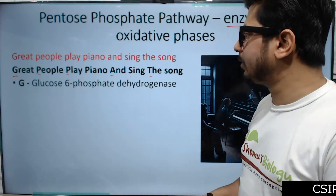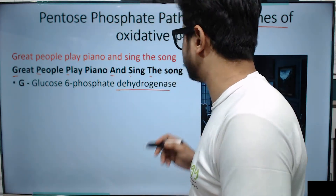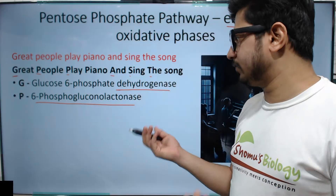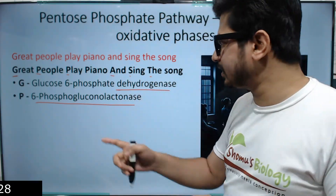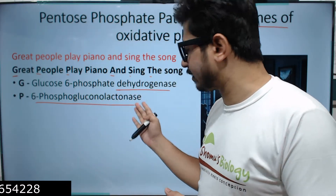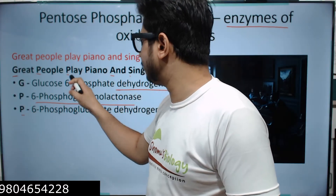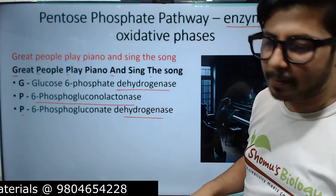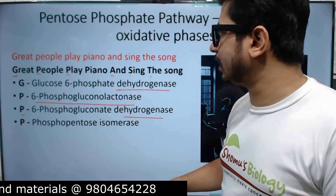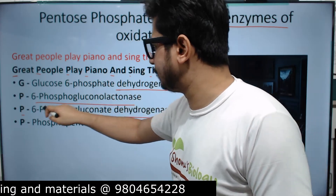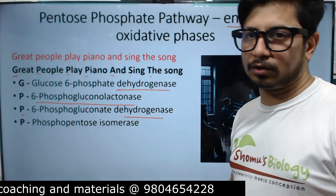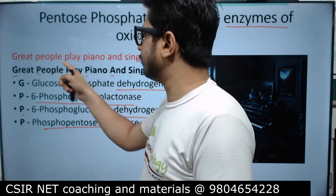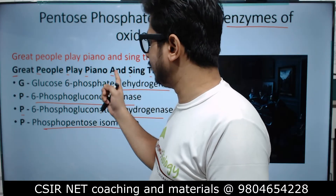The first enzyme, G, is glucose-6-phosphate dehydrogenase. The second enzyme, P, is 6-phosphogluconolactonase, because the substrate is 6-phosphogluconolactone. The third enzyme, another P from 'play,' is 6-phosphogluconate dehydrogenase. Then the fourth, P from 'piano,' is phosphopentose isomerase. So we have: dehydrogenase, lactonase, dehydrogenase, isomerase — three P's total after the G.